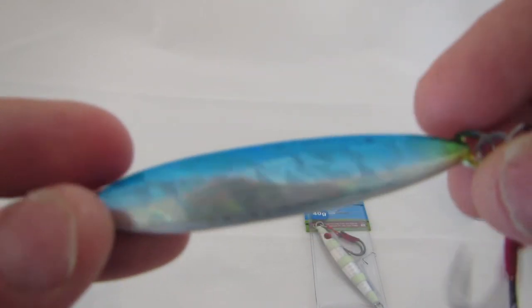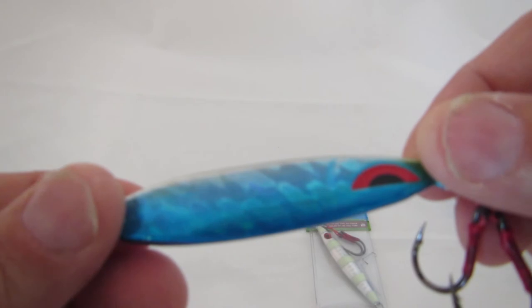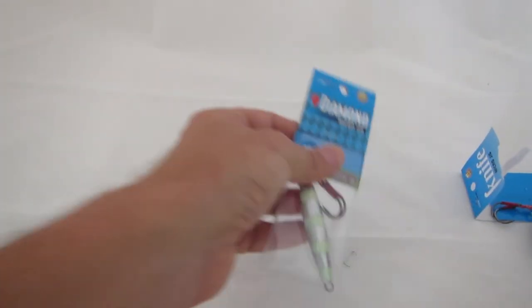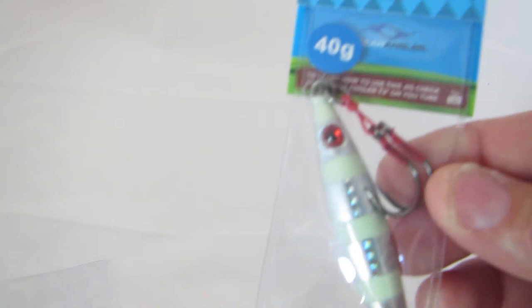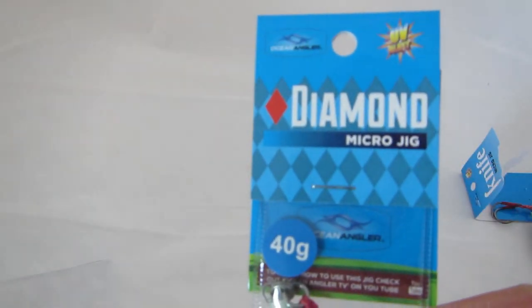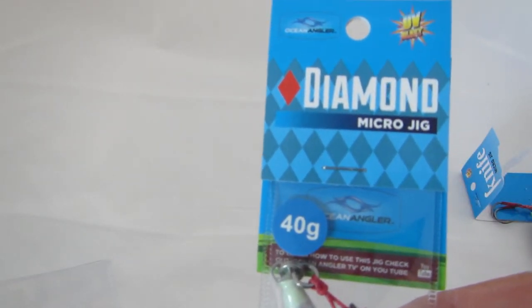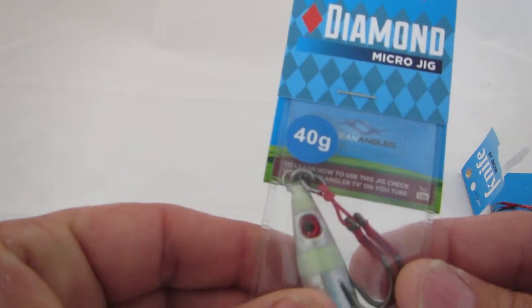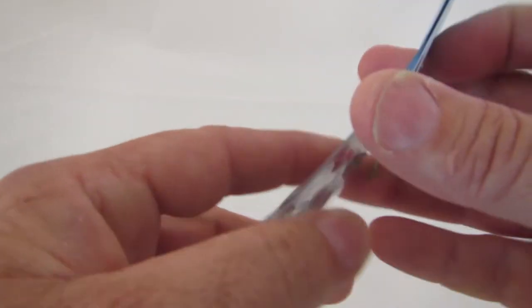And lastly is the diamond shape, which is kind of a cross between the flat shape and the knife shape. So let's open it up and have a look.